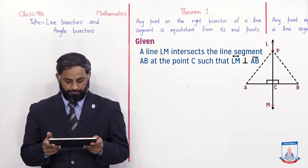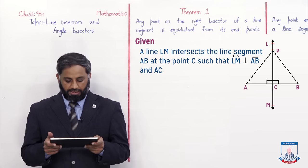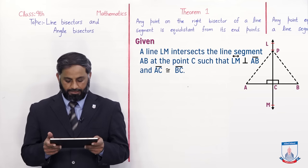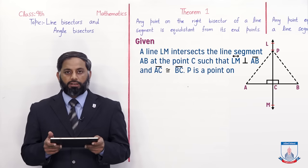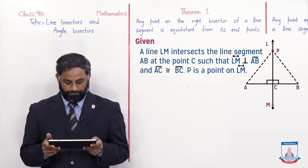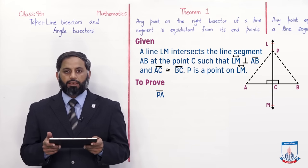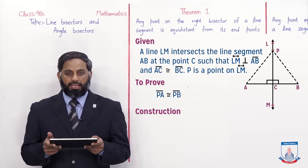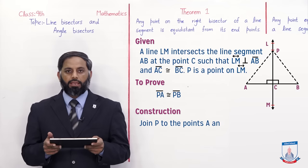Line segment AC is congruent to line segment BC, and P is a point on line LM. To Prove: PA is congruent to PB. Construction: Join P to the points A and B.